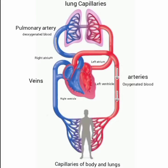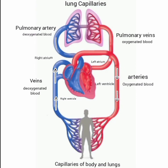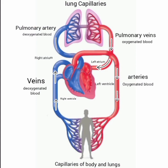Most of the veins bring deoxygenated blood back to the heart — وہ خون جس میں oxygen کی مقدار کم ہوتی ہے دل کی طرف لے کر جاتی ہیں۔ But pulmonary veins bring oxygenated blood from the lungs to the heart — لیکن pulmonary veins oxygenated blood مطلب وہ خون جس میں oxygen زیادہ مقدار میں ہوتی ہے، پھیپڑوں سے دل کی طرف لے کر جاتی ہیں، اور دل اس خون کو پورے جسم کی طرف پمپ کرتا ہے۔